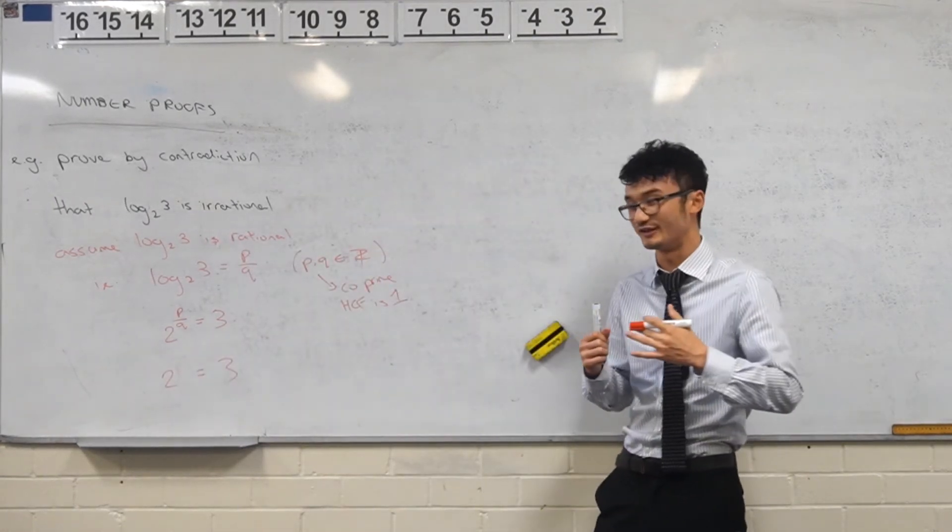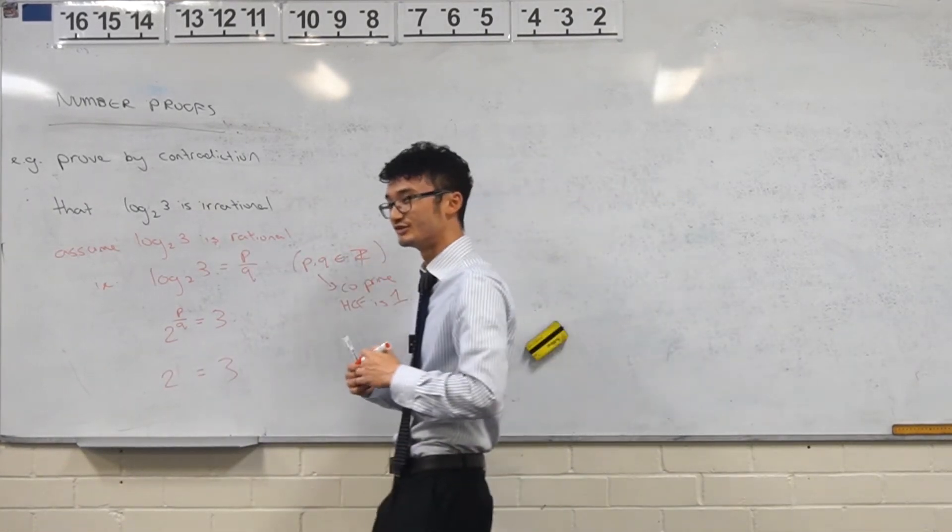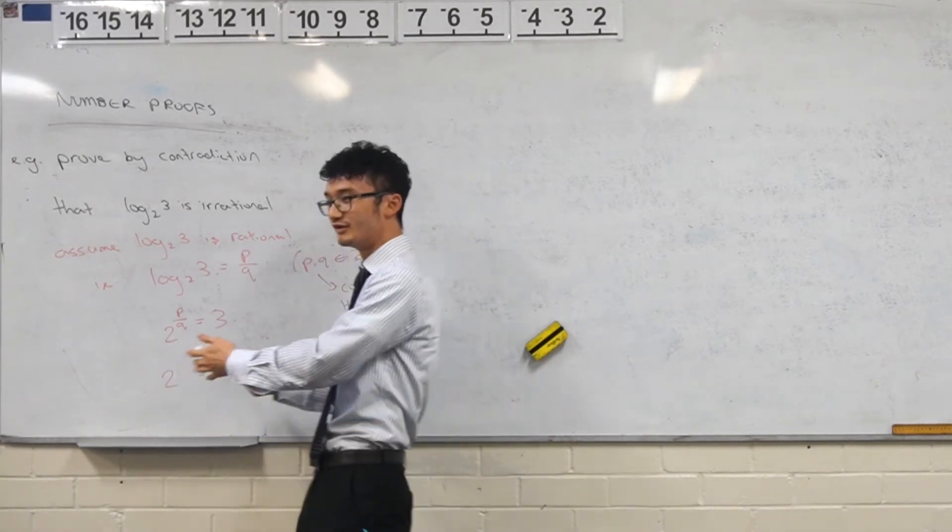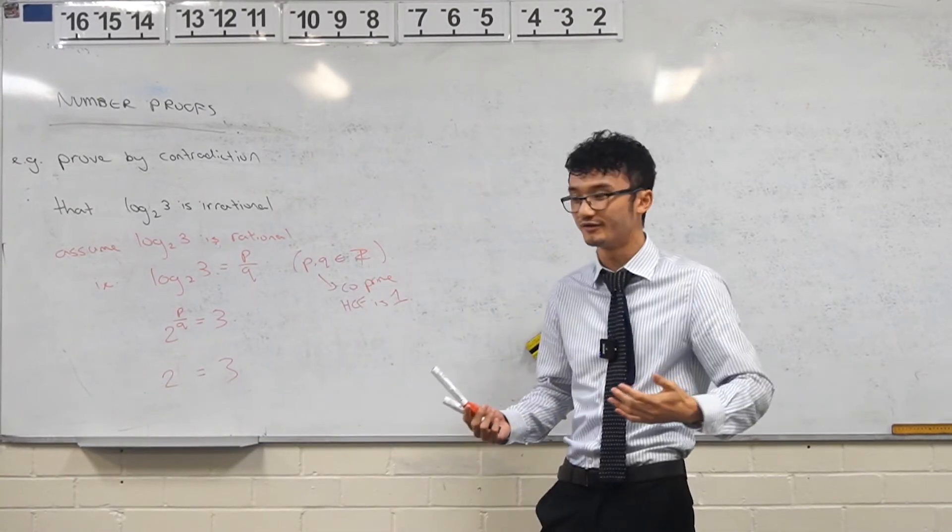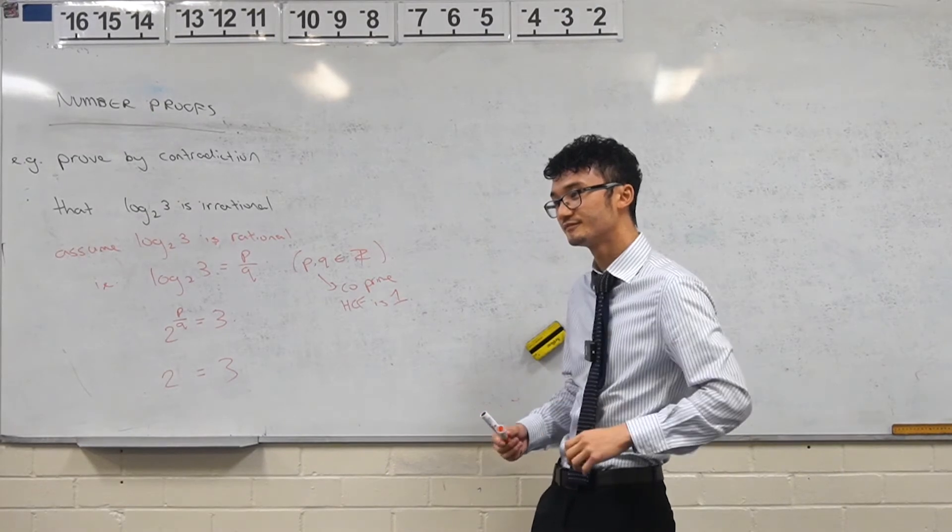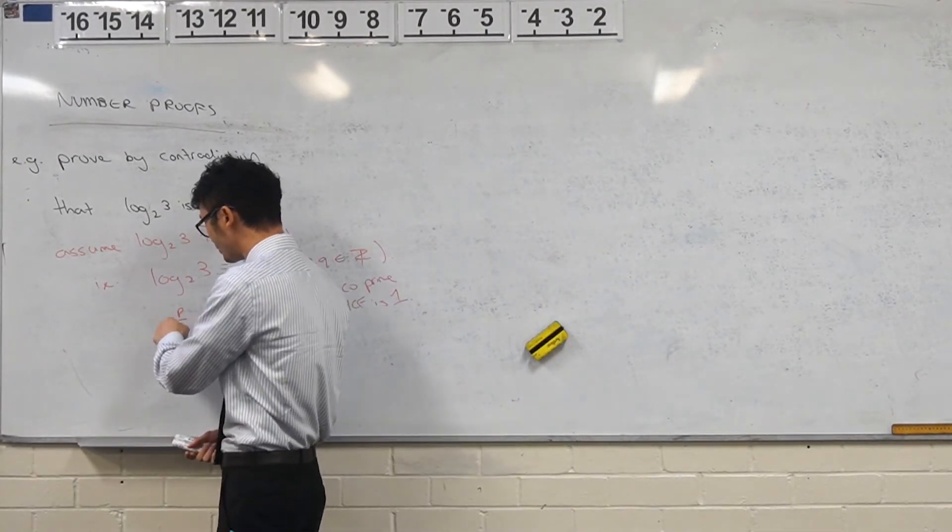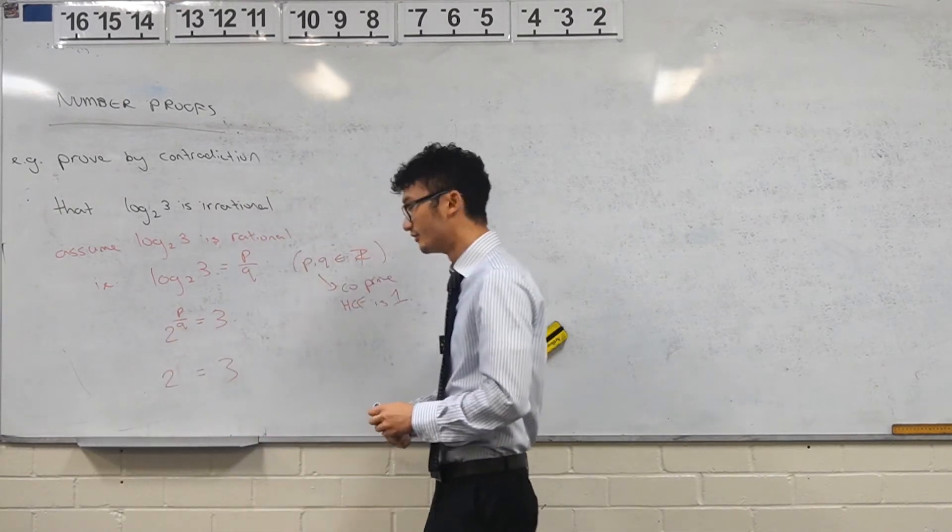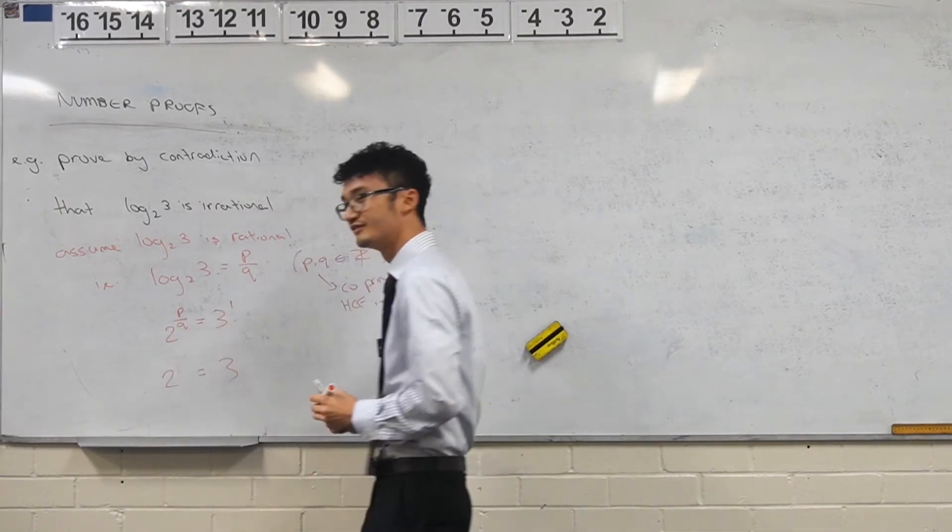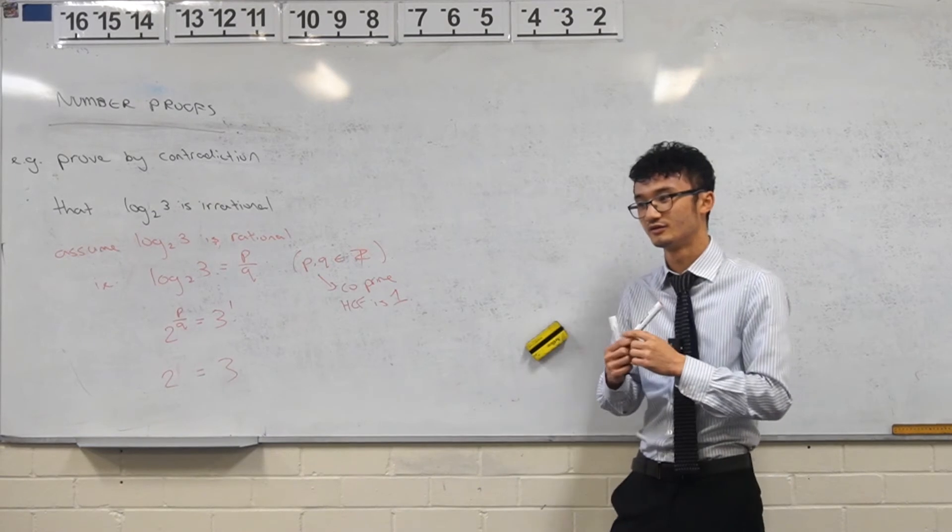So how can I say two to the power of something is equal to three to the power of something? Because that way, it's going to be pretty clear that there's a contradiction. Because two to the power of something should always be an even number. Three to the power of something should be an odd number. Right. It's three to the power of something right now, right? Right. Yeah.